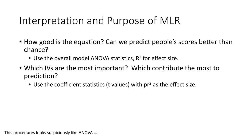Now let's get into the guts of the analysis. When we run regression, first we ask: how good is the equation? Can we actually predict people's scores better than chance? We use the overall model ANOVA statistics — the F test has not gone away — and R-squared for effect size. Then, after assessing if the equation is any good, we dig in and look at which IVs are most important, which ones contribute most to the equation. We use the coefficient statistics B or beta, which are associated with T values, and PR-squared as our effect size. It's similar to ANOVA: first assess overall significance, then do post-hoc style digging to see what's driving it.